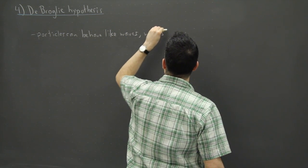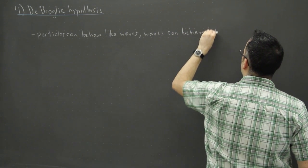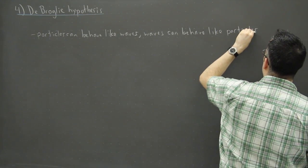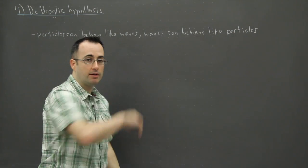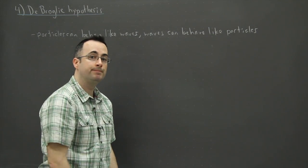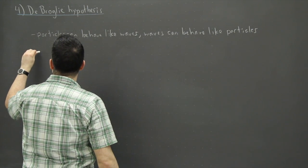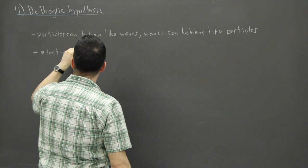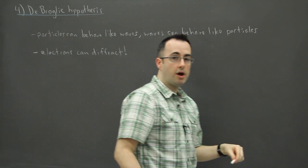And of course waves can behave like particles. This helps us understand what we call the wave-particle duality of light. Light can behave like one or the other, because waves can act like particles and particles can act like waves. This may seem a little weird, but it turns out that electrons can diffract.